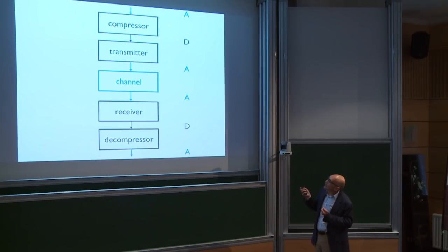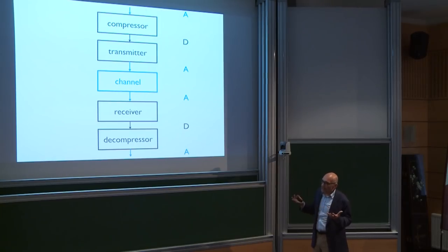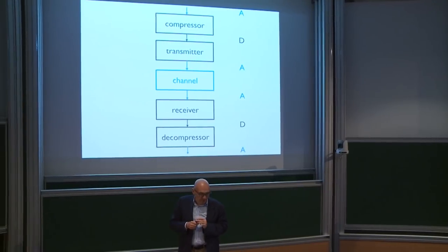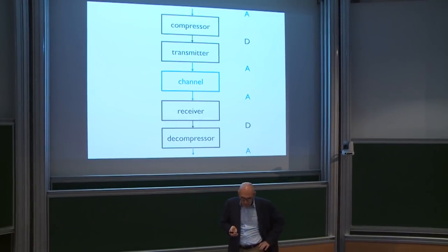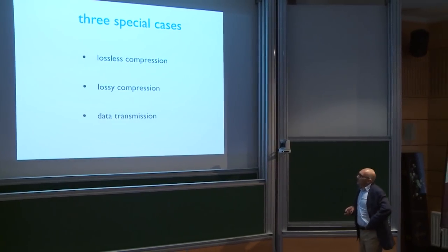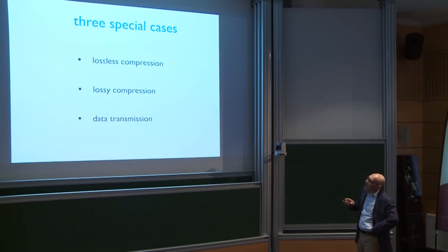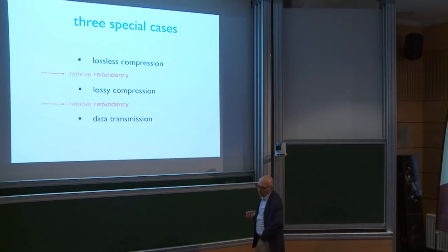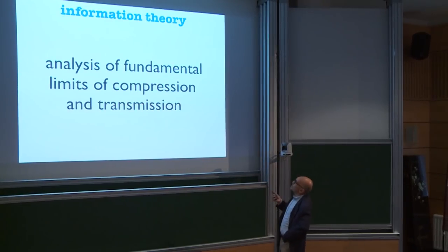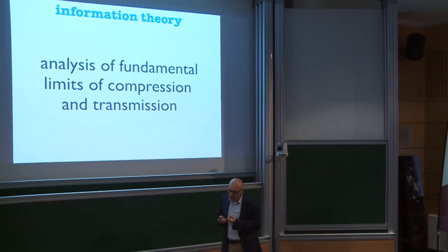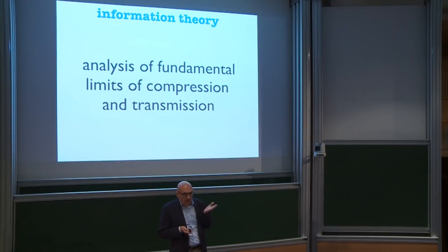So the three cases are: lossless compression, used all the time — when you zip a file, send it through a modem, compact disk, and so on; lossy compression, like MPEG or JPEG; and data transmission, where you protect your data with error-correcting codes. In lossless and lossy compression you want to remove redundancy, while in data transmission you want to add redundancy to combat channel noise. Once we've made all those classifications, we can go back to the technologies we saw before and place them in this framework.